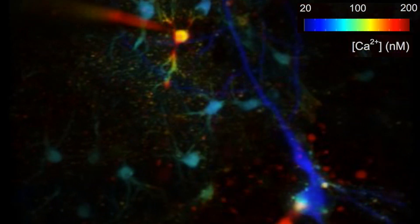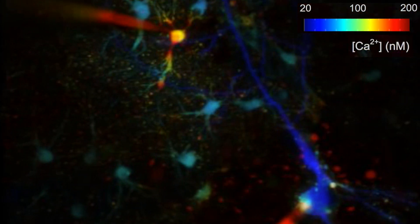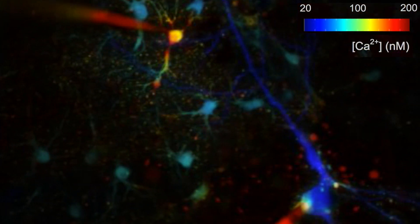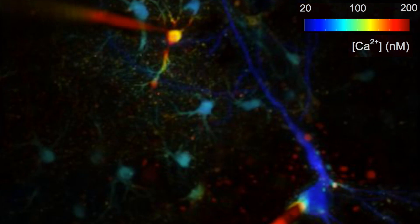We used hippocampal acute slices and filled neurons and astrocytes with the calcium indicator Oregon Green BAPTA-1 to monitor basal calcium levels. The first striking observation was that neurons maintain a much lower basal calcium level than astrocytes.